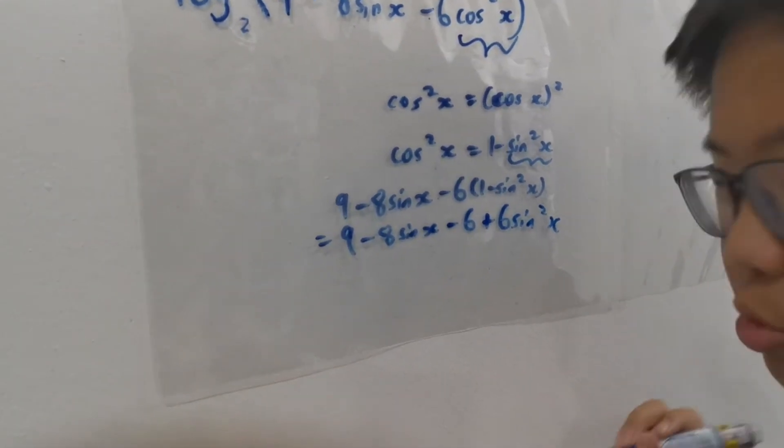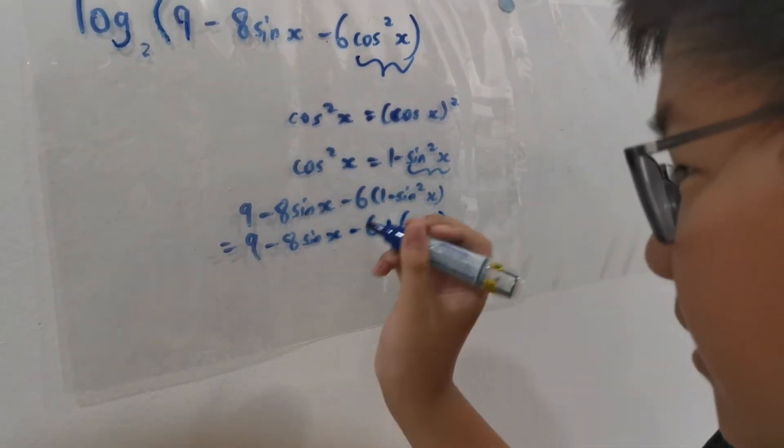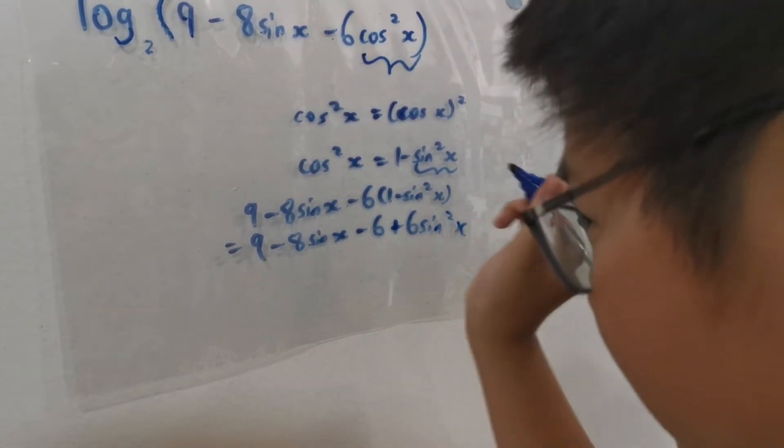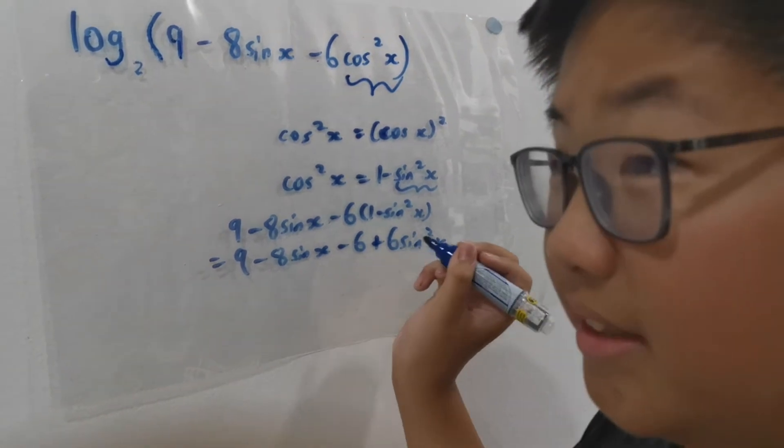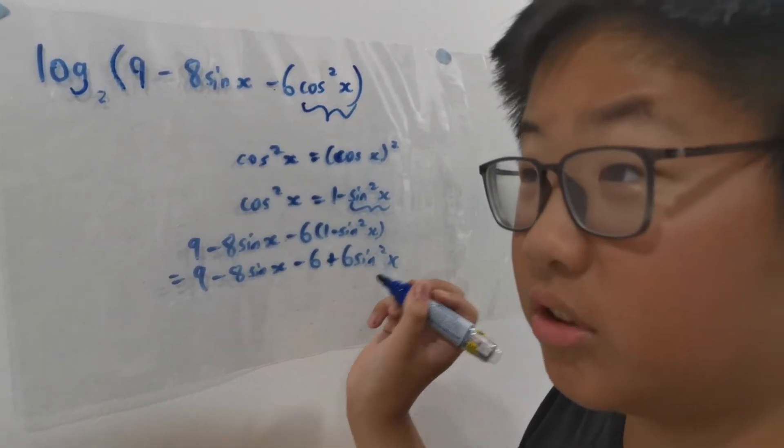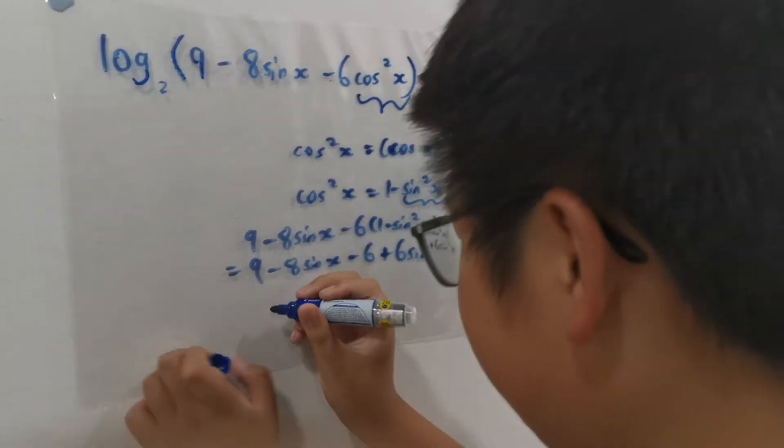We can regroup them to put the sine squared on the left, sine in the middle, and the constant terms on the right. This is a common tradition when working with quadratics.